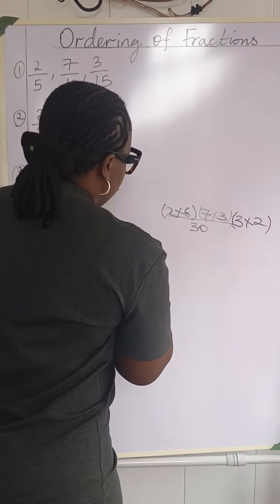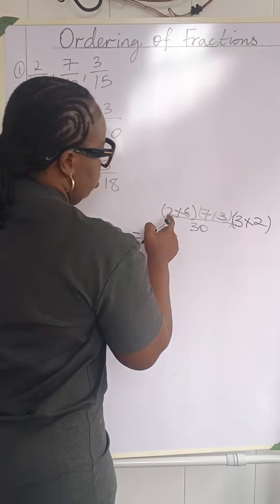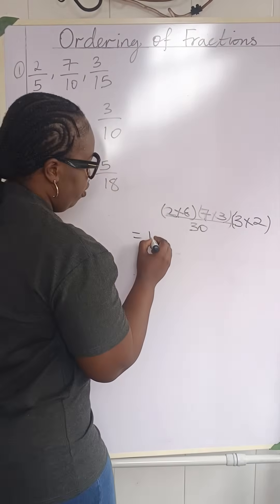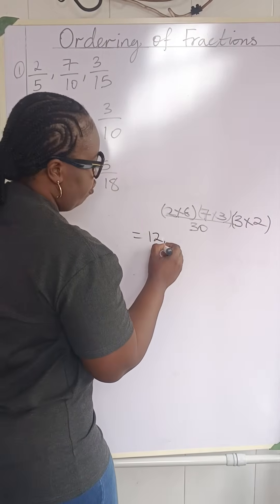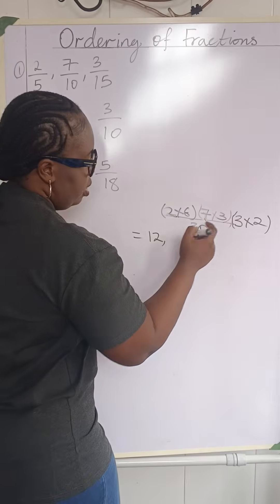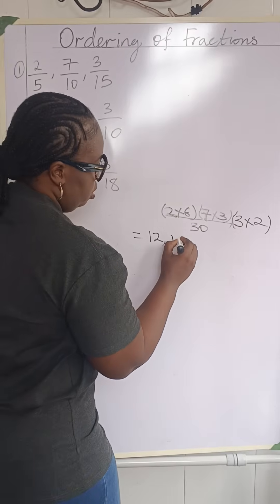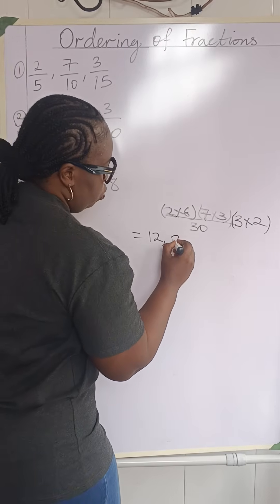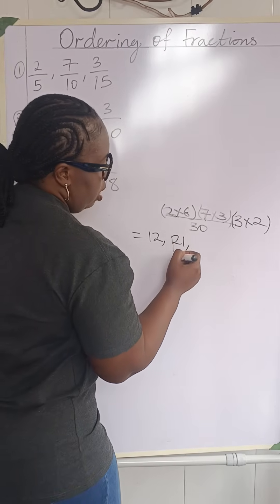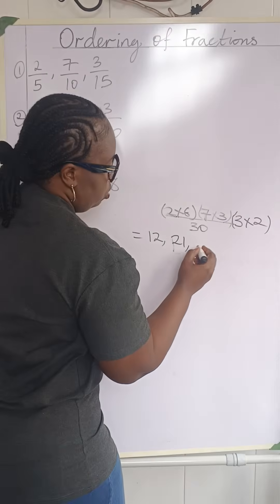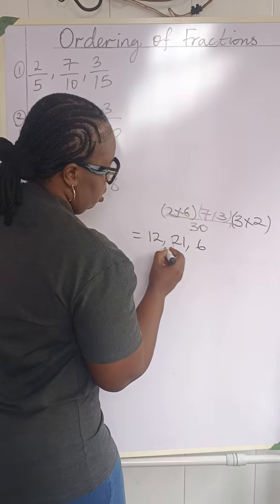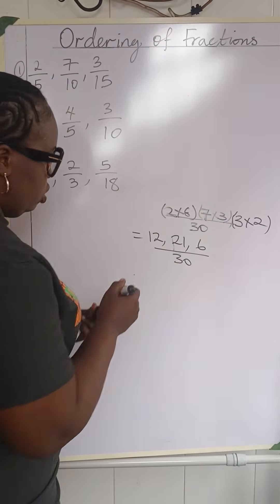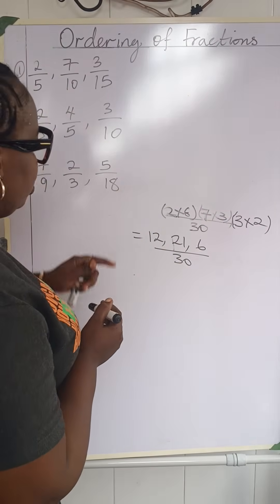So this equals: 2 times 6 is 12; 7 times 3 is 21; and 3 times 2 is 6. All over 30. So our three converted fractions are 12 over 30, 21 over 30, and 6 over 30.